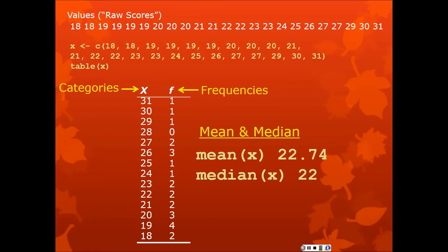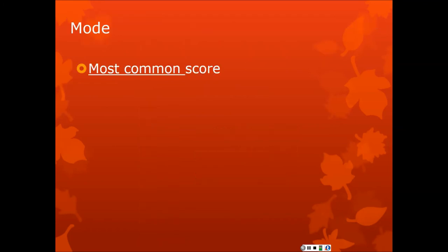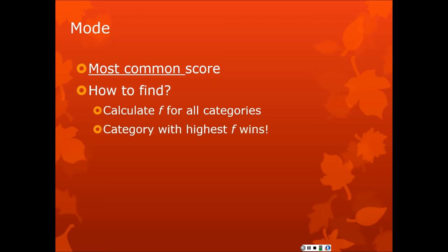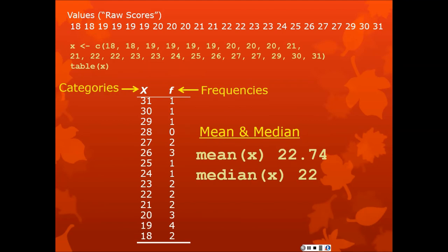So the mean and the median, the mean is 22.7 and the median is 22. Now, if you have access to SPSS or PSPP, you can just enter all those x values. You can take the raw scores and enter those in one column into a variable. And then you can use descriptive statistics from the pull down analyze menu and you can get these values too, the mean and the median. Now, the mode is the most common score. So the way we find it is you calculate frequency for all categories and the category with the highest frequency wins.